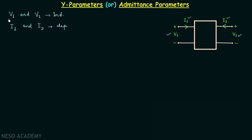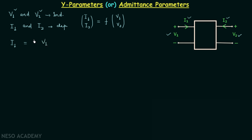This means I1 will depend on both V1 and V2, and I2 will also depend on both V1 and V2. Therefore, current I1 is a function of the two voltages V1 and V2, and current I2 is also a function of V1 and V2. Current I1 depends on V1 according to parameter Y11 and on V2 according to parameter Y12. So, I1 equals Y11·V1 plus Y12·V2 — this is equation number 1.